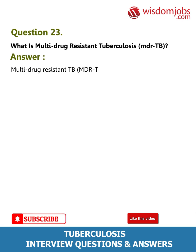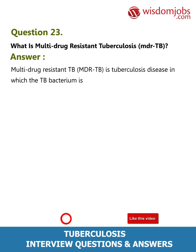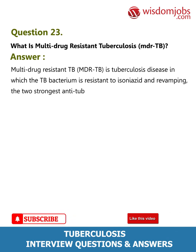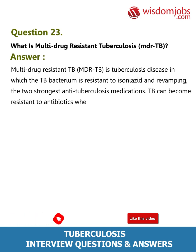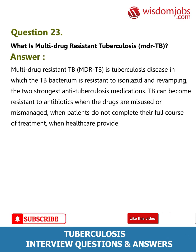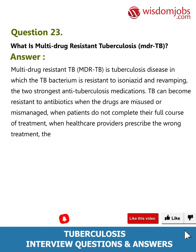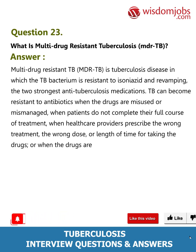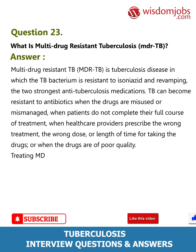Answer: Multi-drug resistant TB (MDR-TB) is tuberculosis disease in which the TB bacterium is resistant to isoniazid and rifampin, the two strongest anti-tuberculosis medications. TB can become resistant to antibiotics when the drugs are misused or mismanaged — when patients do not complete their full course of treatment, when healthcare providers prescribe the wrong treatment, the wrong dose, or wrong length of time for taking the drugs, or when the drugs are of poor quality.